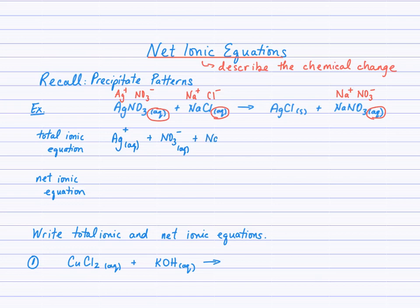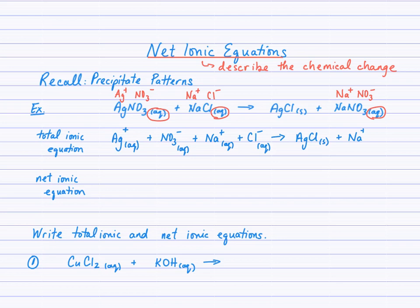Then the sodium ion: symbol, charge, AQ. Plus the chloride ion: symbol, charge, AQ. Then I draw an arrow, because that's where I am in the equation. The next substance is a solid, so anytime you see a solid, liquid, or gas, you copy down that formula exactly as it appears in the original equation. Then we have sodium nitrate aqueous, so I break that up into its ions: symbol, charge, AQ for each.